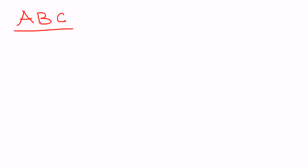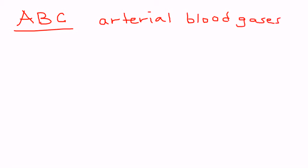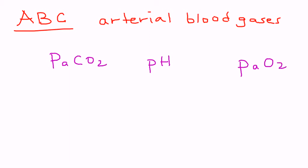The next part of diagnostic testing in asthma is ABG — arterial blood gases. Arterial blood gases are very important and are used in patients with significant respiratory distress or symptoms who may be going into respiratory failure. There are three components: PaCO2, pH, and PaO2.